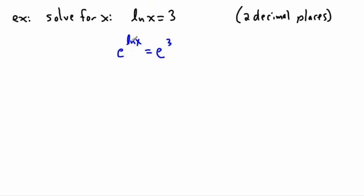The advantage, however, of this is that, look at this now - this LN and this E, they undo each other. That means the X sort of drops down. So we have X equals E to the 3. That's it. That's the exact value.